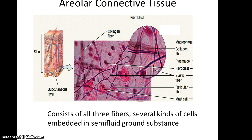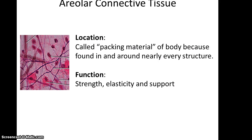Areolar connective tissue consists of all three fibers. You can see long fibers grouped together — that would be the collagen fibers — and thinner fibers that branch out, which are the reticular and elastic fibers. All around the fibers is a semi-fluid ground substance where you find many kinds of cells, from immunological cells such as macrophages and mast cells, to fibroblasts that produce the fibers. Areolar connective tissue is often called the packing material of the body because it is found in and around nearly every structure, functioning to provide strength, elasticity, and support.